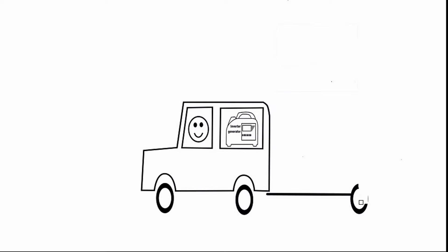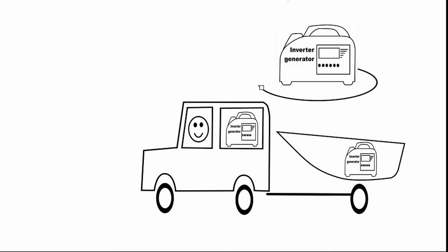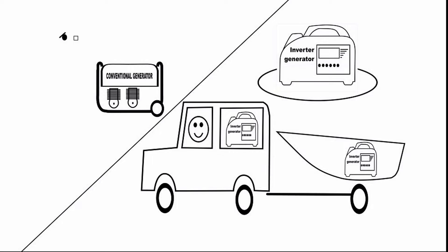Inverter generators are surprisingly small and lightweight for the electrical generation punch that they pack. This means that they will easily fit in your car or boat. In contrast, many conventional generators are heavy and bulky, often requiring a substantial metal frame and wheels. They lack the convenience factor.